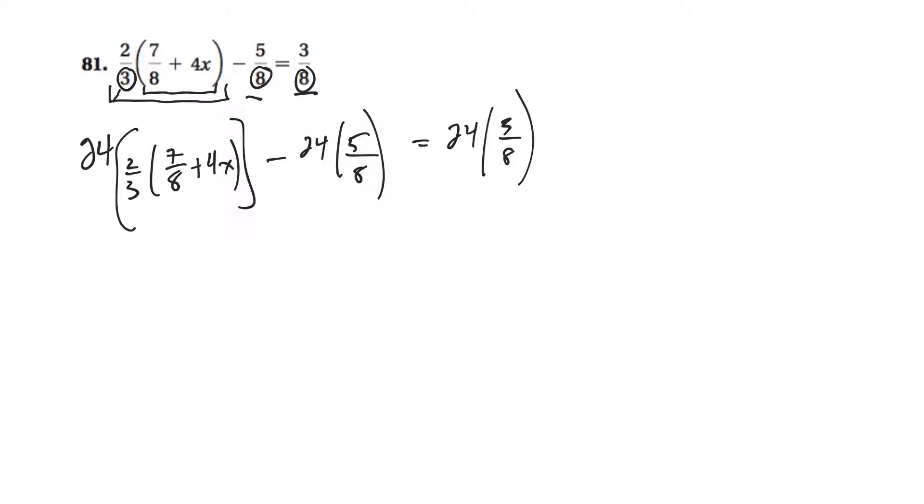So on this first one, all I have to do is figure out this part right there. So 24 times 2 divided by 3, I think that comes out to 16. So I'll have 16 times 7/8 plus 4x. Notice that that 24 only got multiplied by this. It didn't multiply by this other part because that's part of the same term.